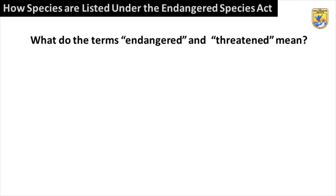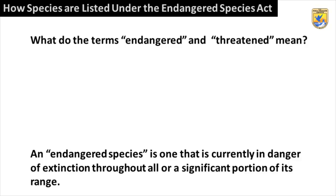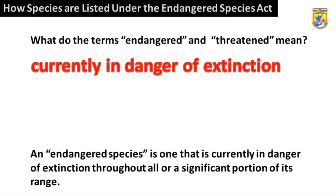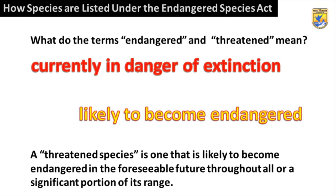What do the terms Endangered and Threatened mean? A species is listed under one of two categories, endangered or threatened, depending on its status and the degree of threat it faces. An endangered species is one that is currently in danger of extinction throughout all or a significant portion of its range. A threatened species is one that is likely to become endangered in the foreseeable future throughout all or a significant portion of its range.